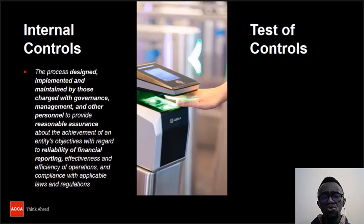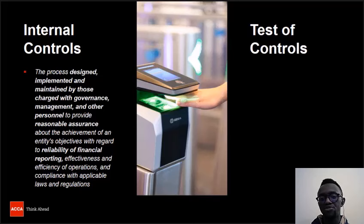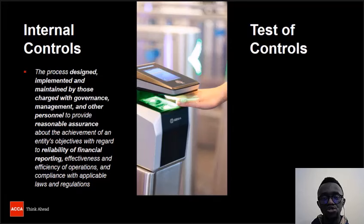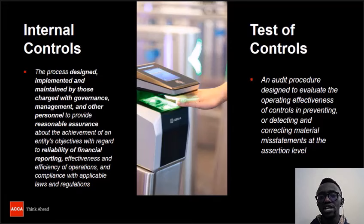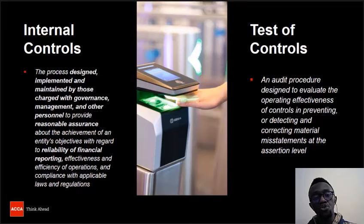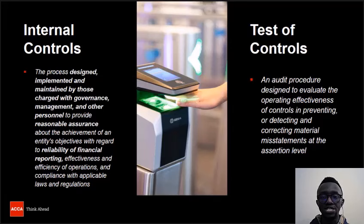Let's look at an example of an internal control — that's a picture of a biometric scanner. Other examples of internal controls include CCTVs, reconciliations like supplier statement reconciliations and bank statement reconciliations, policies, authorization and approval techniques, and segregation of duties. A test of control, on the other hand, is an audit procedure designed to evaluate the operating effectiveness of controls — how effective are our controls in preventing or detecting and correcting material misstatements at the assertion level? The internal controls are developed by management, while the test of controls are an audit procedure done by the auditor.